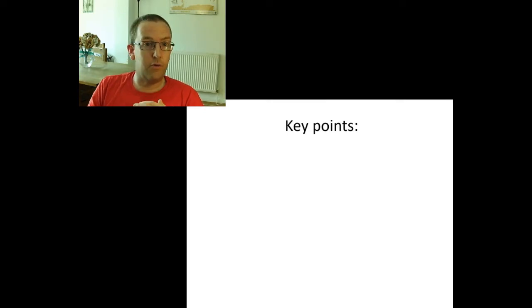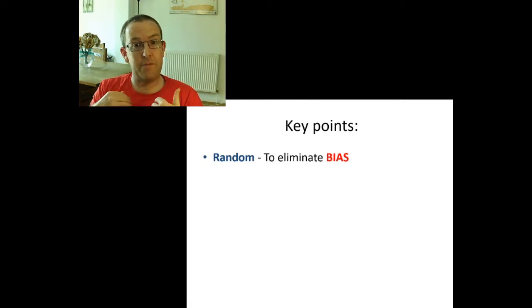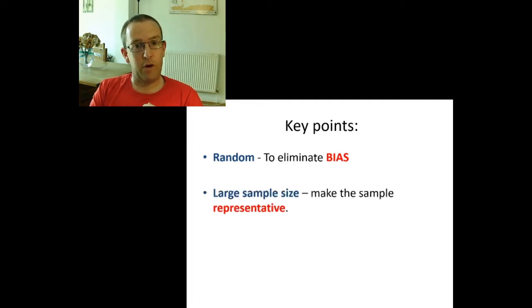So as you can see, the rules are the same wherever you are. So our key points to this point. Randomness, if you're doing that, eliminates bias. There are other ways to achieve this, to eliminate bias, but that is very important. Next one. A large sample size makes sure that the sample is representative. So if you've got an unbiased representative sample, you may well be able to rely on your results.